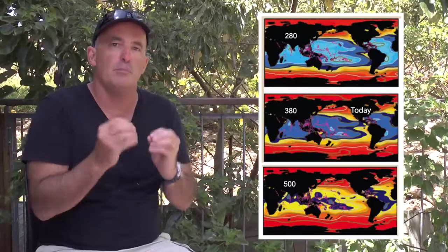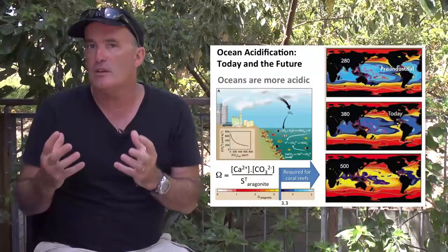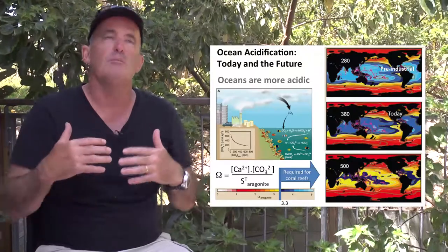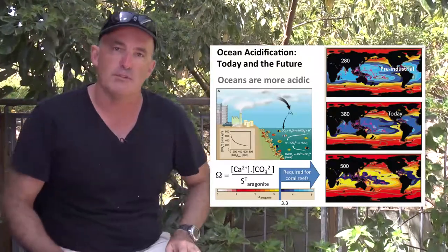At higher atmospheric CO2 concentrations, however, the blue areas have retracted to a small part of the tropical regions of the planet. Note particularly how many of the pink dots now fall outside the blue areas and into those areas that are yellow — the areas that are below 3.3 in terms of the aragonite saturation state. This highlights the concern that many people have for the changes that are occurring in the chemistry of the oceans as we pump more CO2 into the atmosphere.